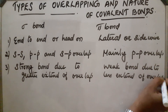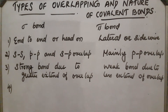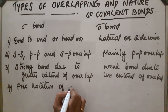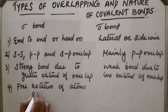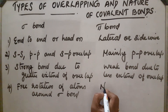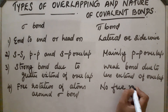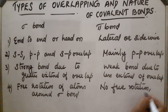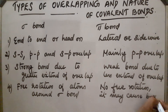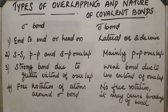Fourth point: free rotation of atoms around a sigma bond is possible. However, in the case of a pi bond, there is no free rotation because it may cause the breakage of the bond. These are the differences between sigma bond and pi bond.